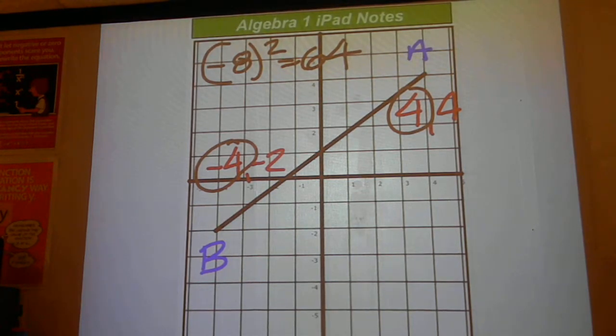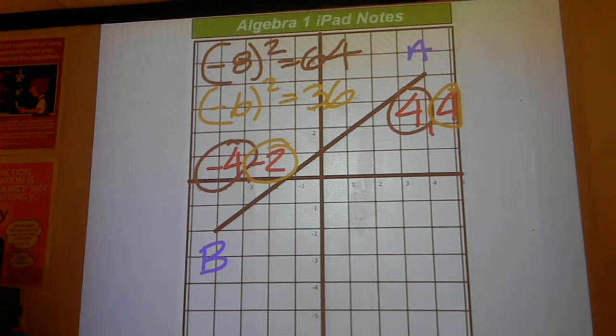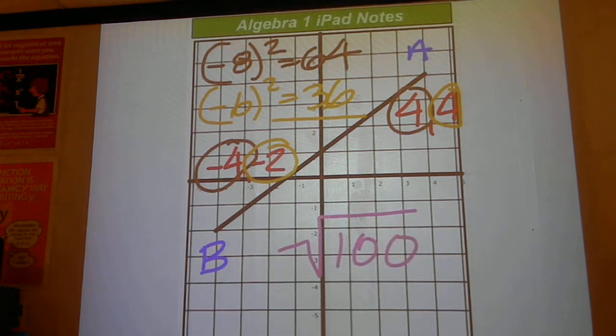And then a different color here, negative 2 minus 4 is negative 6. Square that to get 36. Now add both of those together and come up with 100, and find the square root of 100, which turns out to be an even 10.